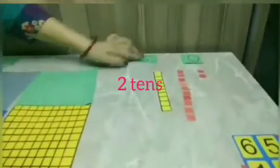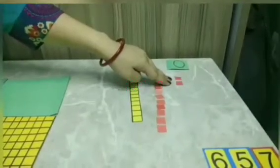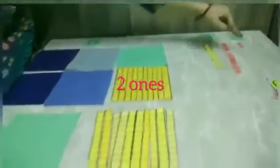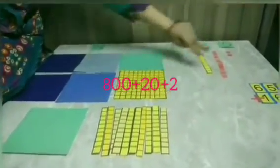2 tens. And how many ones? 2 ones. So what is this term? 800, 20, 2. What? 822.